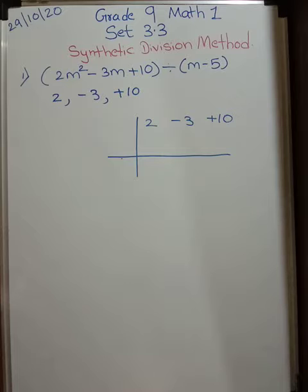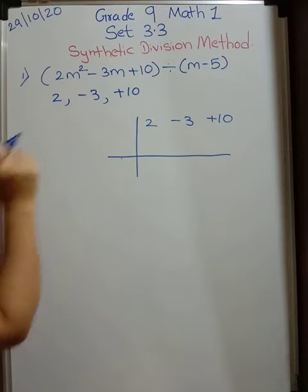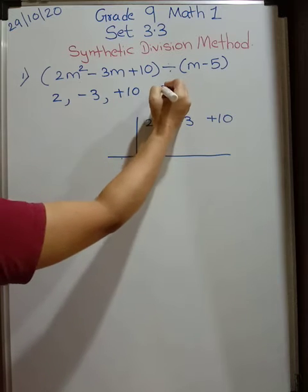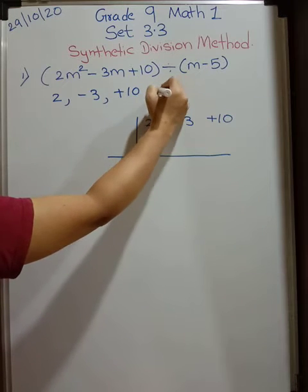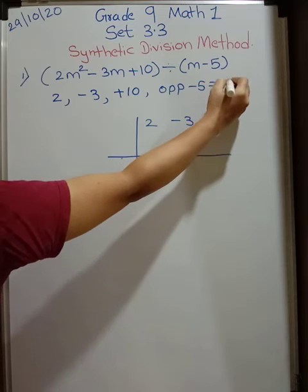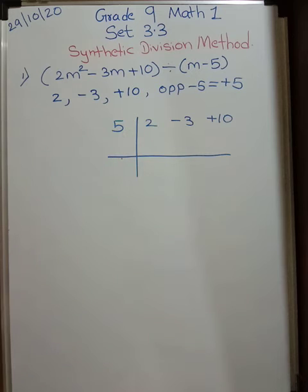Second step is clear. Now m minus 5 is divisor. So write the number opposite to minus 5 over here. That is very very important. So write here opposite. So you will not go wrong. Opposite to minus 5 is equal to plus 5. So this plus 5 you are going to write it over here. Third step.